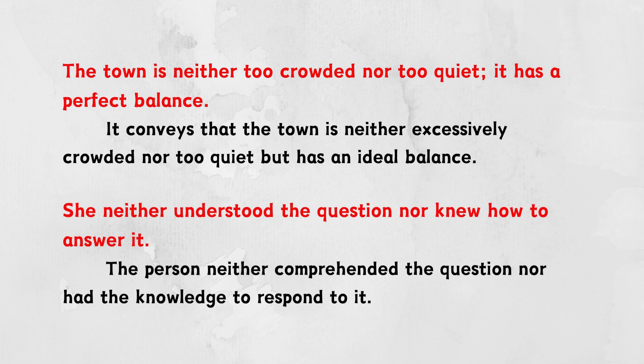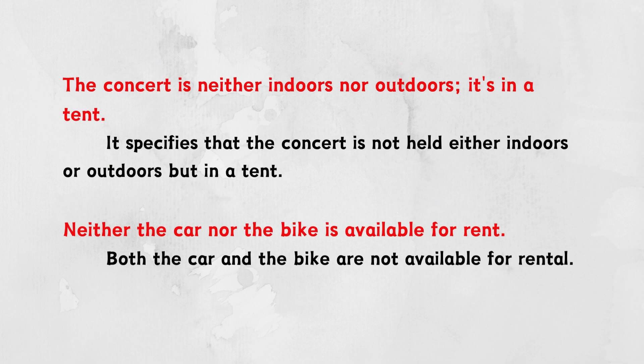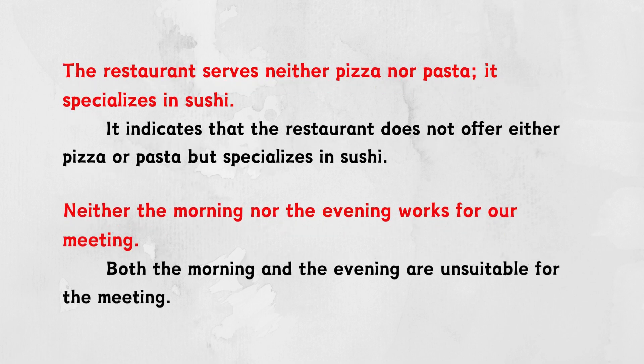She neither understood the question nor knew how to answer it. The person neither comprehended the question nor had the knowledge to respond to it. The concert is neither indoors nor outdoors. It's in a tent. It specifies that the concert is not held either indoors or outdoors but in a tent. Neither the car nor the bike is available for rent. Both the car and the bike are not available for rental. The restaurant serves neither pizza nor pasta. It specializes in sushi. It indicates that the restaurant does not offer either pizza or pasta but specializes in sushi.